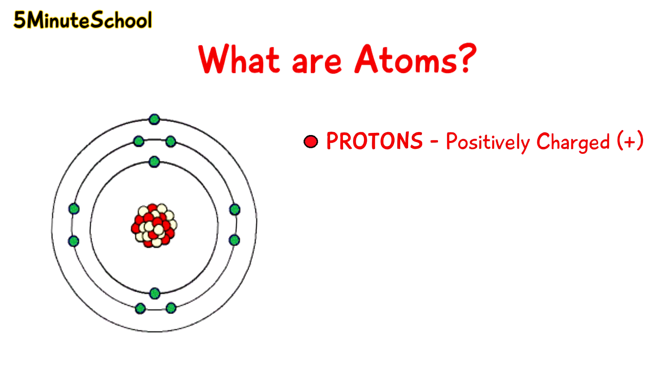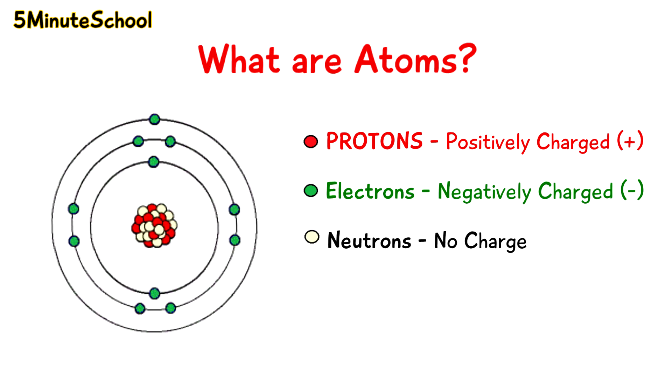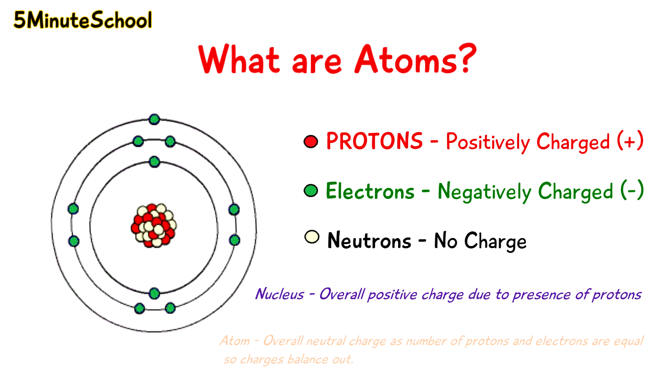Protons are positively charged, electrons are negatively charged, and neutrons don't have a charge. The nucleus of an atom is positively charged because it contains positive protons. Atoms are usually overall neutral in charge because the number of protons equals the number of electrons. The positive and negative charges balance out. Remember that the nucleus is positively charged but the overall atom itself is neutral.